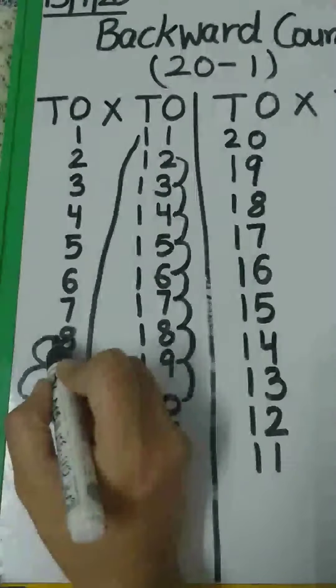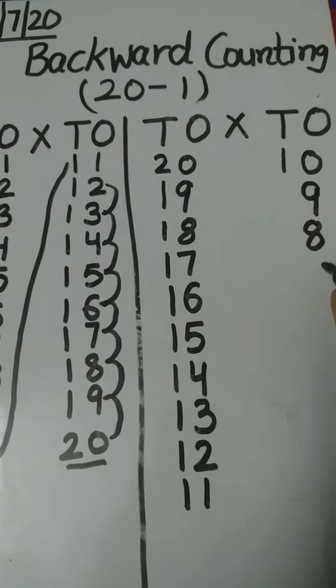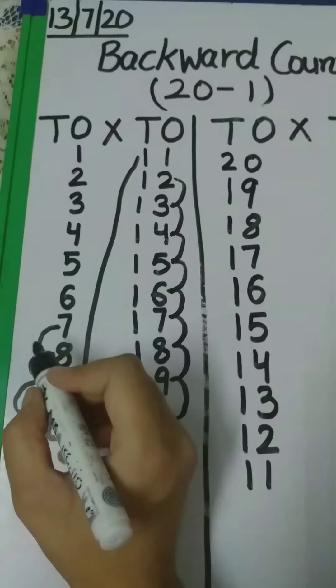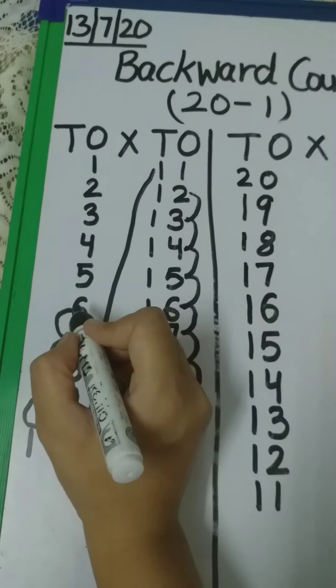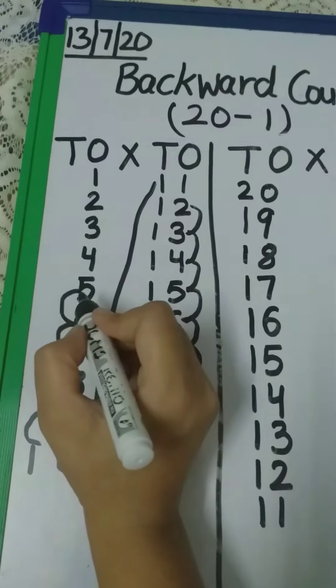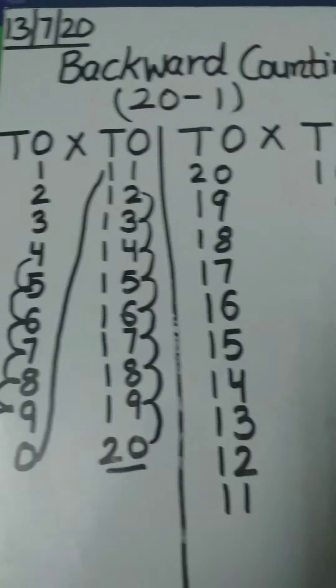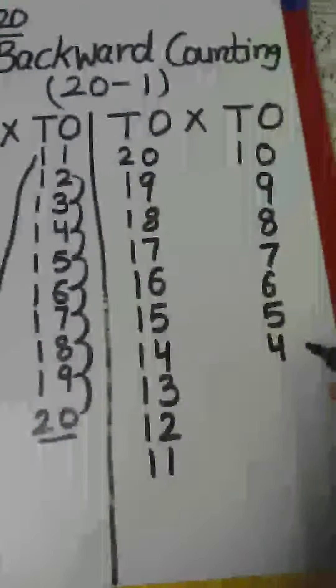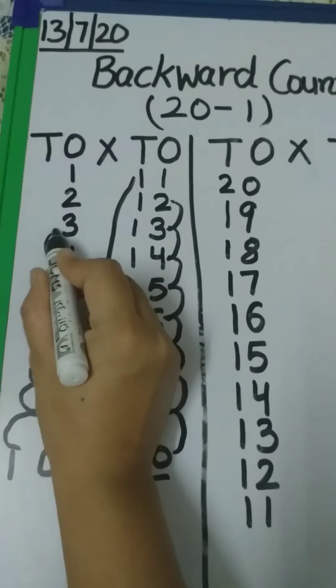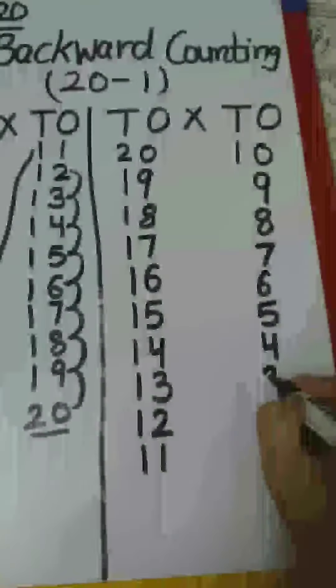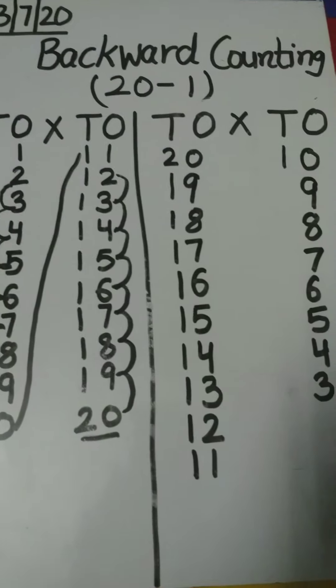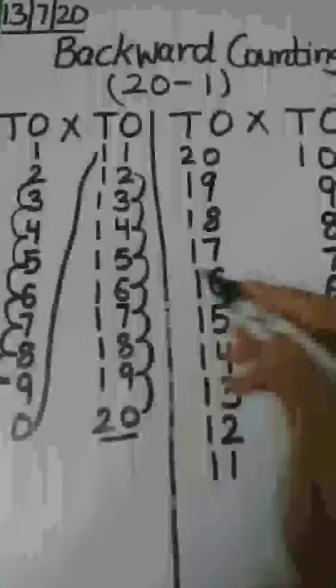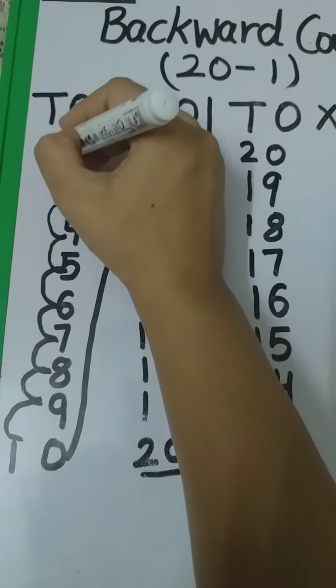What comes before number 8? 7. Then 6, 5. What comes before number 5? 4. Then 3, 2. And what comes before number 2 is 1. So children, we did our backward counting from 20 to 1.